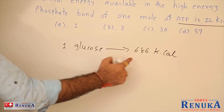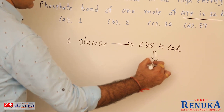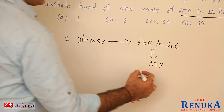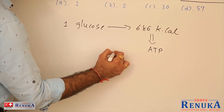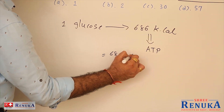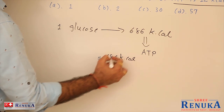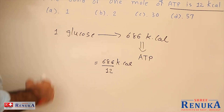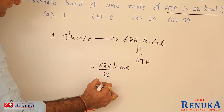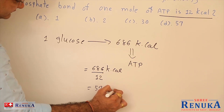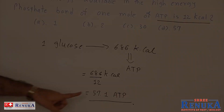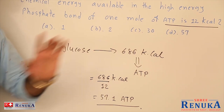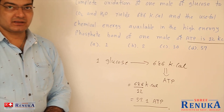If all this energy needs to be stored in ATP, we calculate: 686 kilocalories total released from one glucose, and 12 kilocalories gets stored per ATP. So it means it is nearly 57.1 ATP — 57 should be the answer, which is the nearest value to the option given.